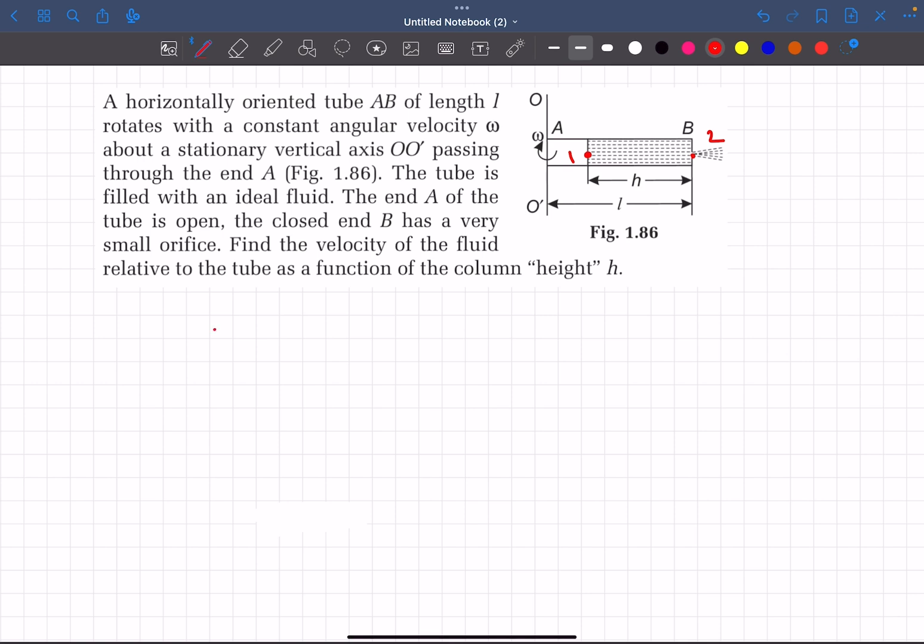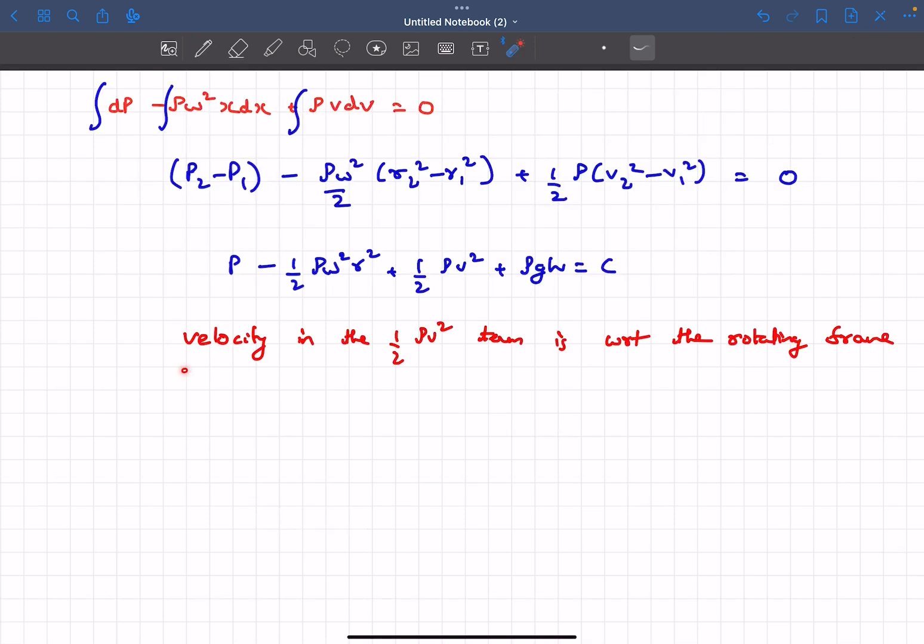At point 1 the pressure is p_0 as it's exposed to the atmosphere. Keep in mind that the velocity in the half rho v square term is with respect to the rotating frame. It won't be wrong if you write this as V_r as well.